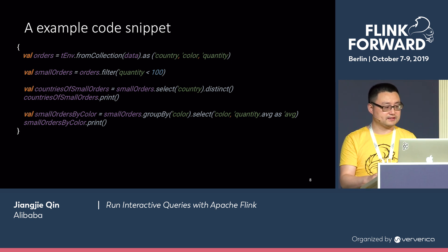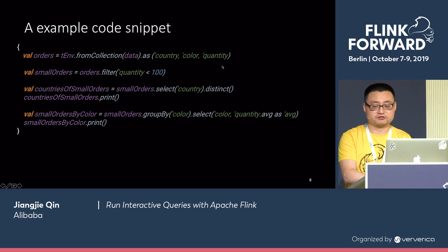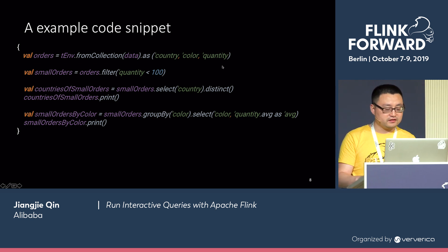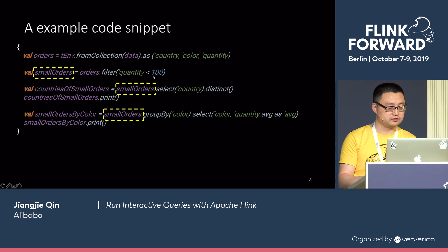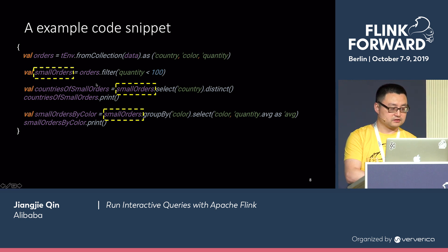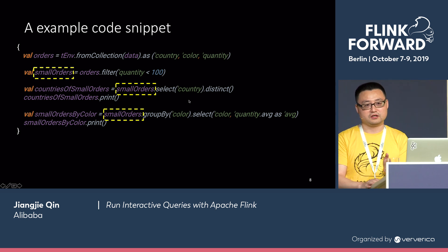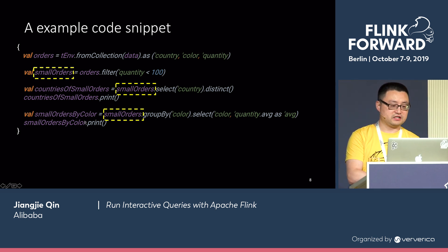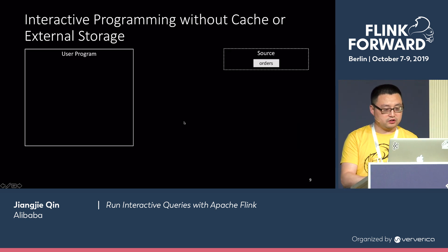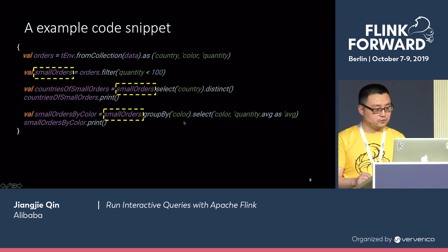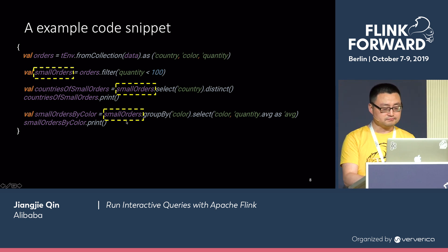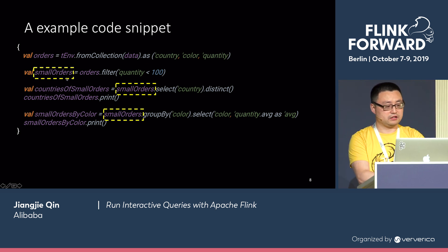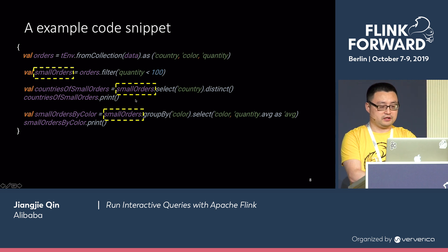Here's a very simple example. I have orders from different countries and colors, and each order has a quantity. I'm trying to get all the small orders — those with quantity less than 100. After getting the small orders, I first group by country to see which countries those small orders are from and print that out. Then I'm curious about the average quantity by color for all the small orders, and print that result as well. As you can see, the small orders table is computed here for the first time, and it's used twice afterwards.